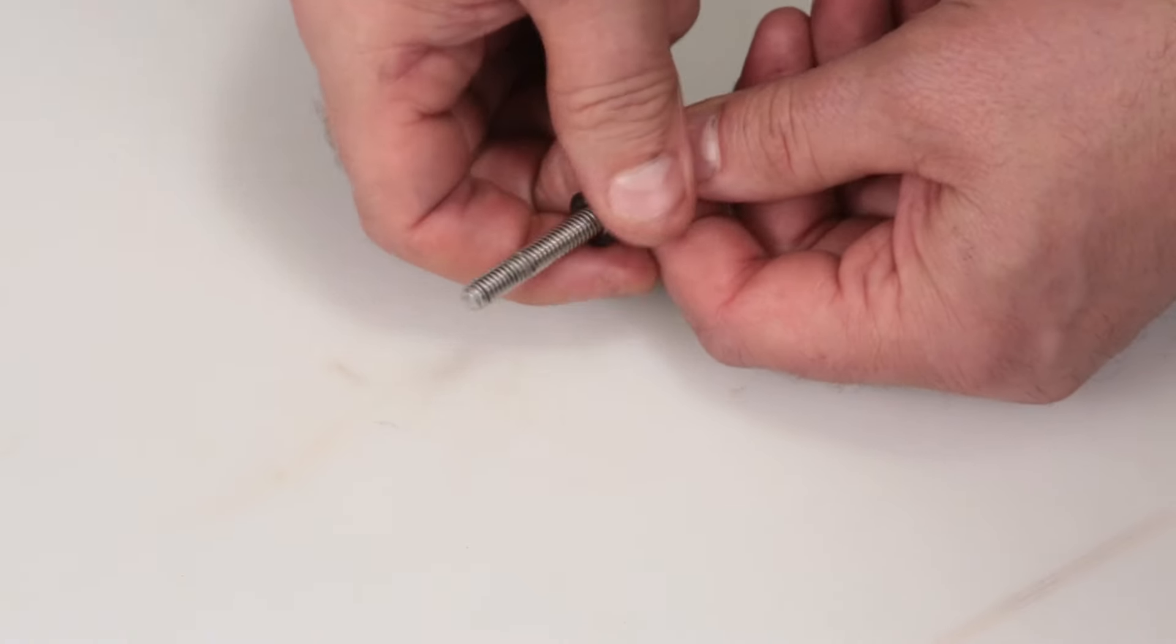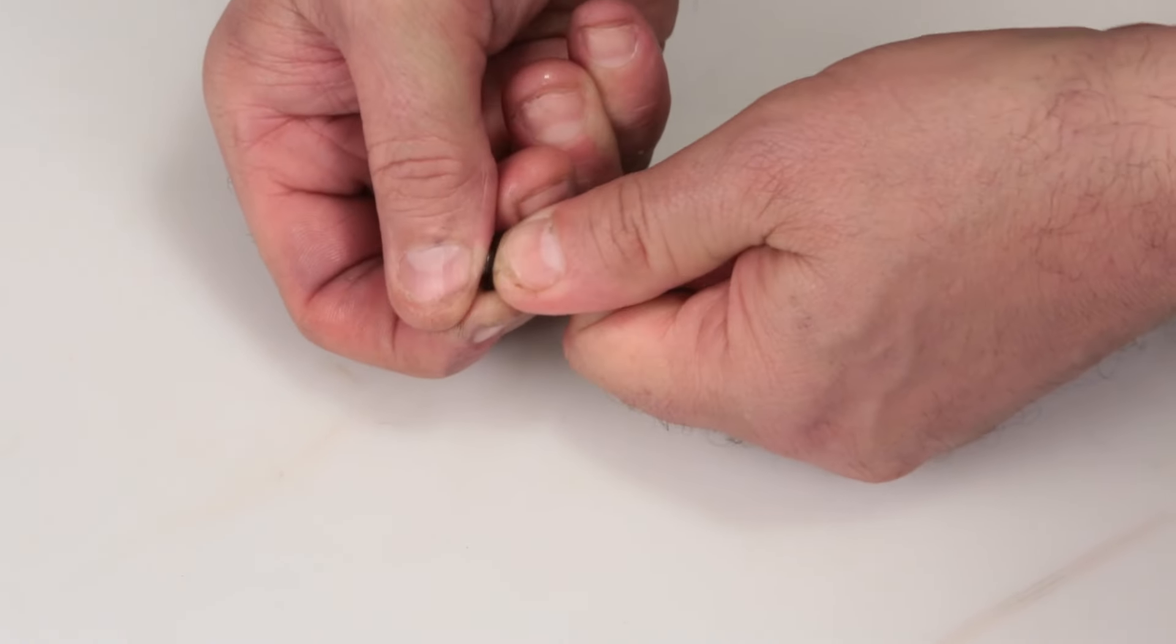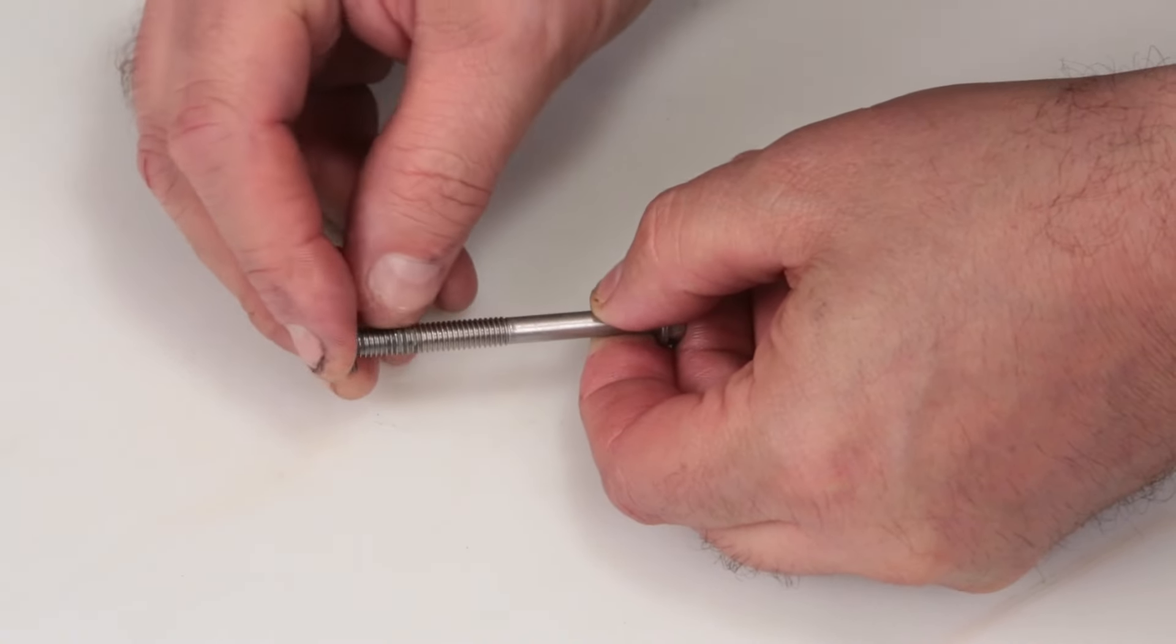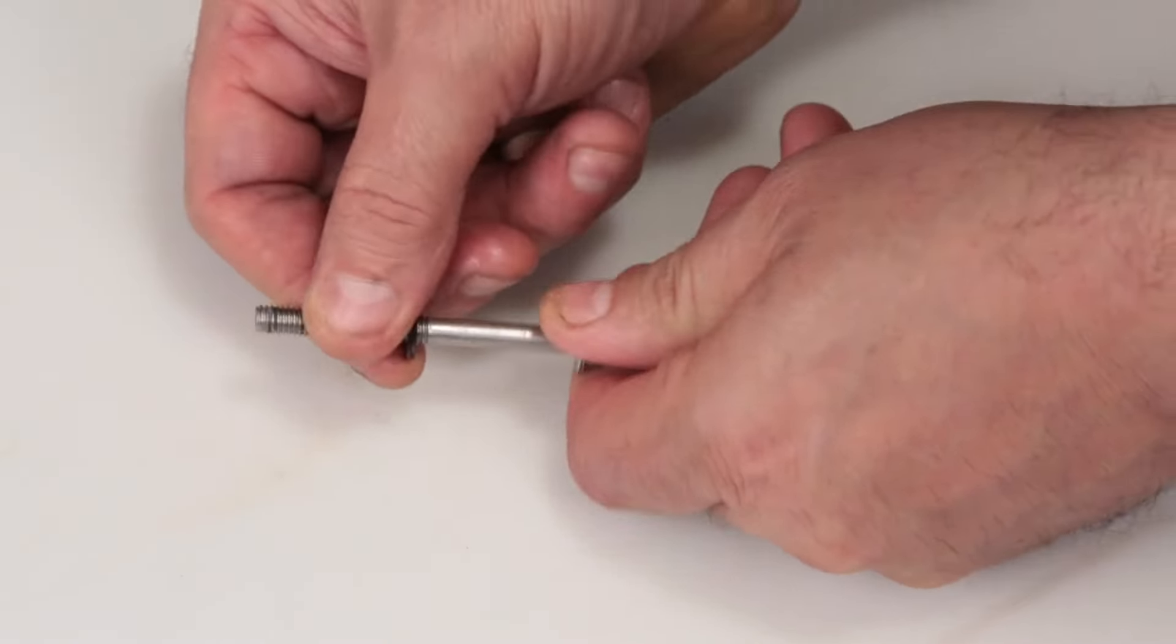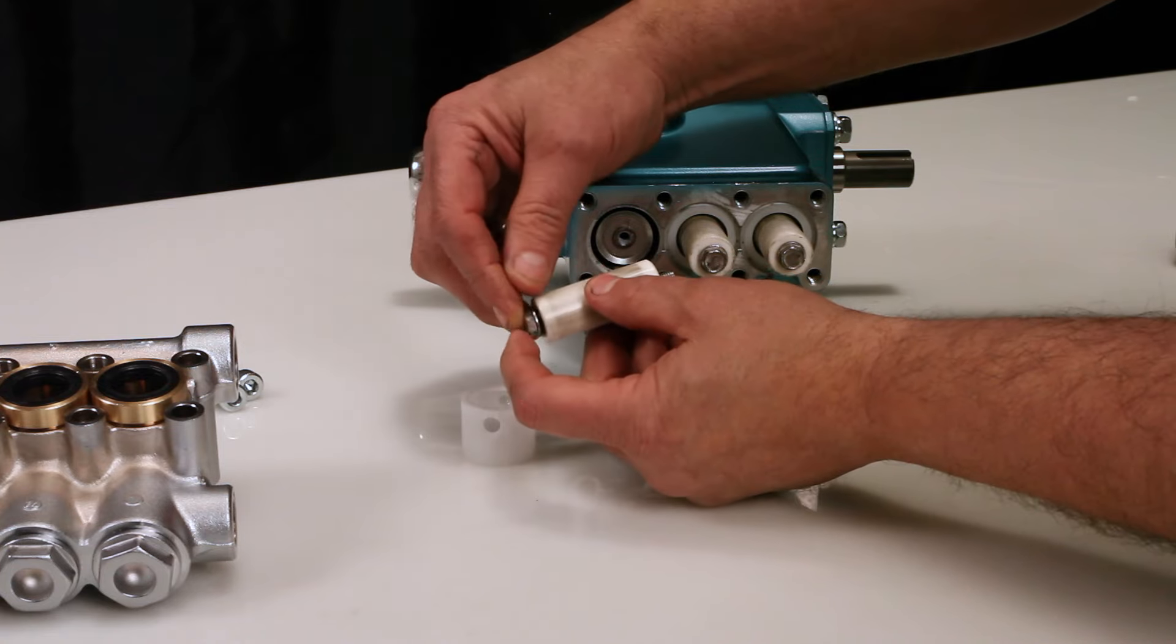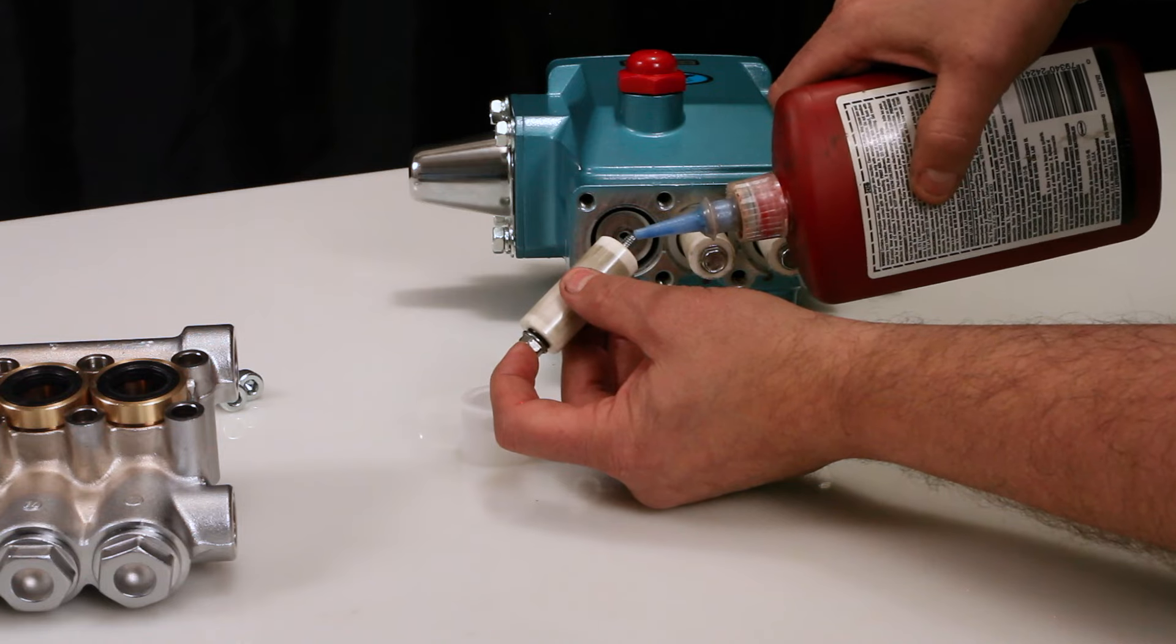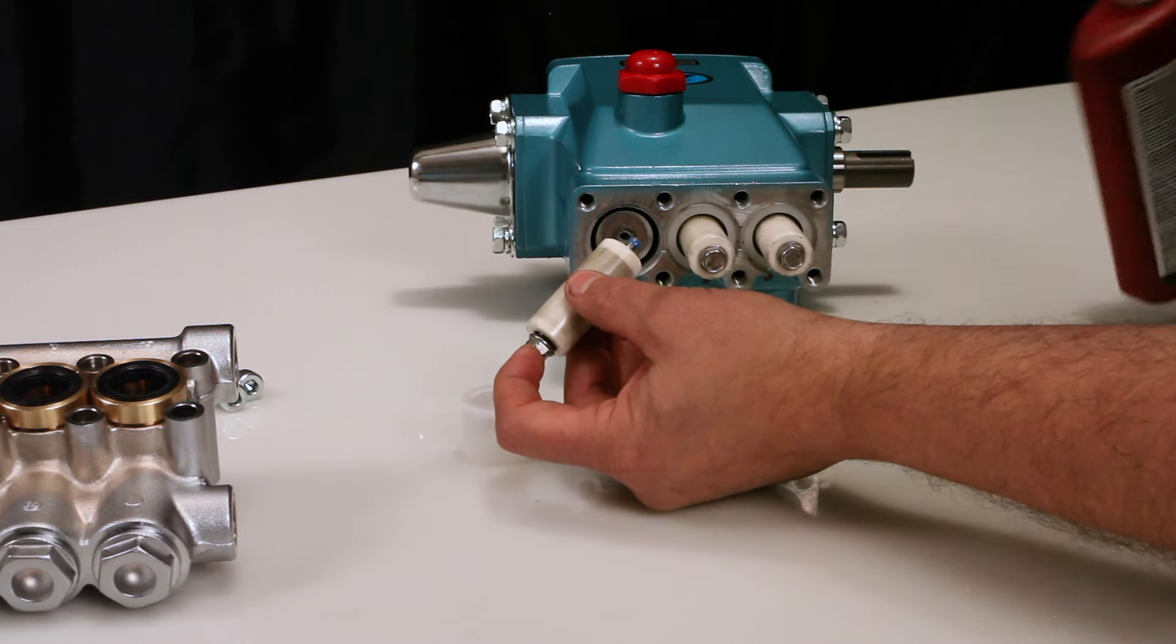Before reinstalling the plunger retainer, change the plunger retainer gasket included in the seal kit. After replacing the gasket, insert the plunger retainer into the plunger. Before installing the plunger assembly, apply thread sealant on the end of the plunger rod.